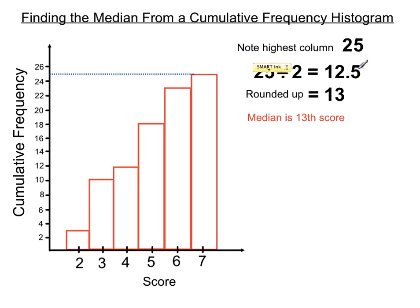We divide by 2, we get an answer, we round it up, and that indicates which score we're looking for. If we wrote all these scores out in order, it would be the 13th score that's right in the middle.